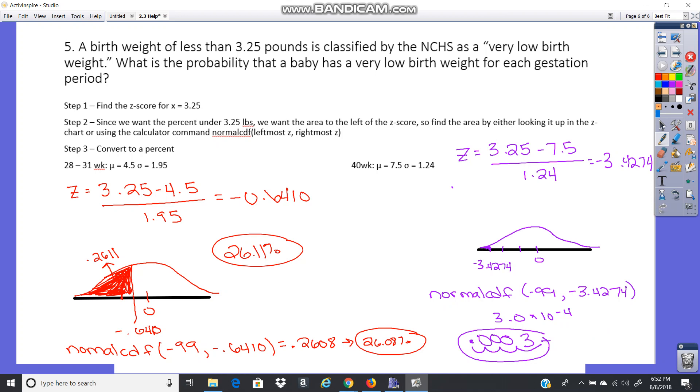Okay, if I turn that into a percent, that is 0.03% that a baby is born 3.25 pounds or less at a full gestation period. So really, really small percentage.